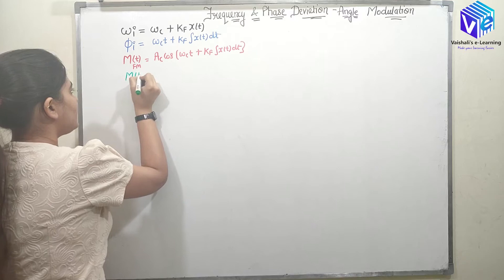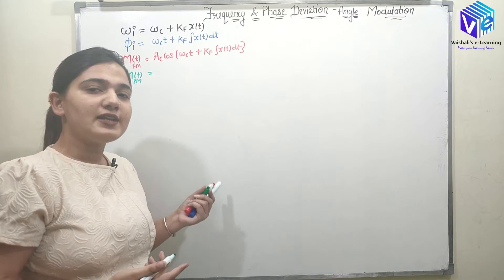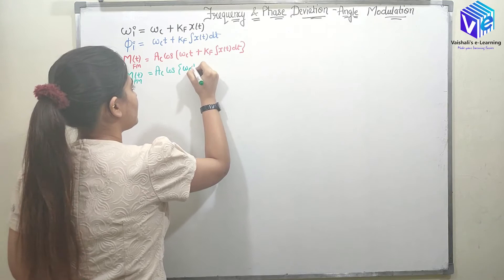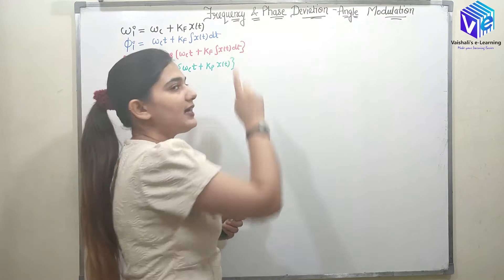For phase modulation, I am now taking the actual parameter values. The phase modulated signal is A_c cos(omega_c*t plus k_p*x(t)). Now we need to find out the frequency deviation first.